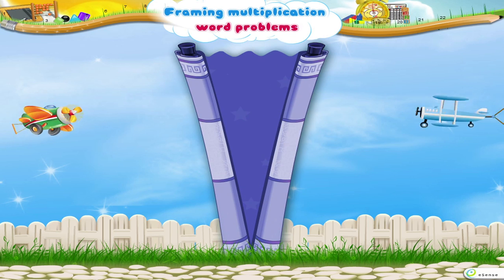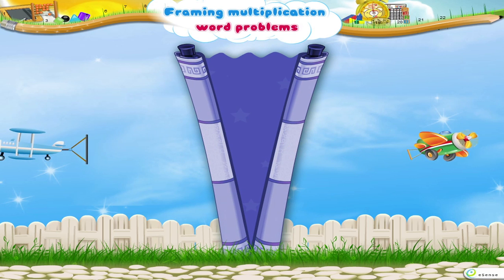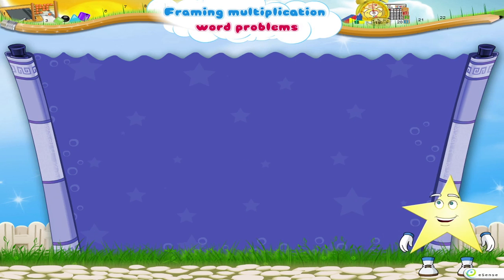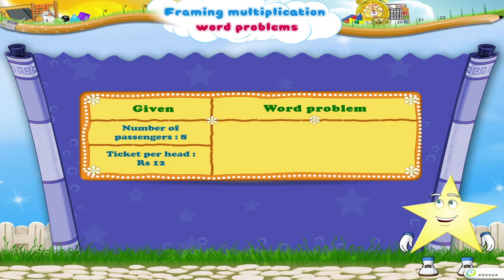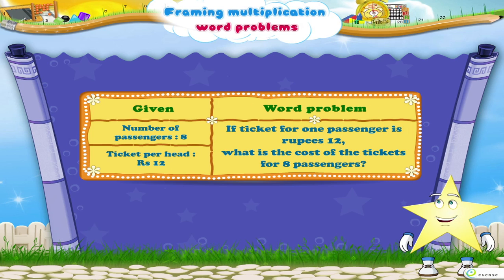Let us try this one. The information given is 8 passengers, and the ticket per head is Rs. 12. The word problem is: the ticket for one passenger is Rs. 12. What is the cost of the tickets for 8 passengers?